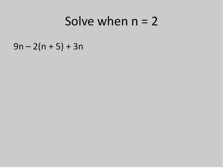Alright. Let's solve this one here. I guarantee the answer for this one is not going to be 1 half. We're going to solve this one where n is equal to 2. So we're going to substitute in there. 9 times 2 minus 2. And then this will be again 2 plus 5 plus 3 times 2.